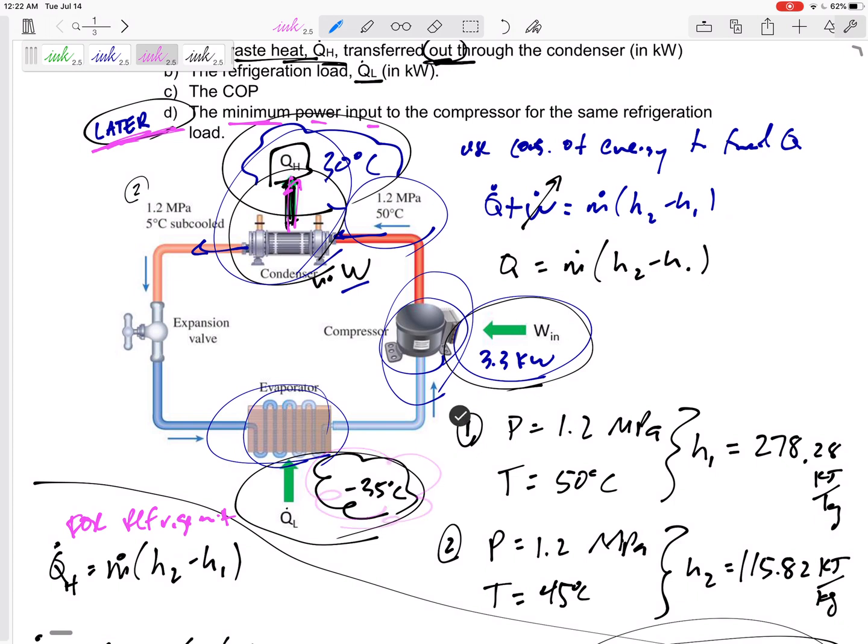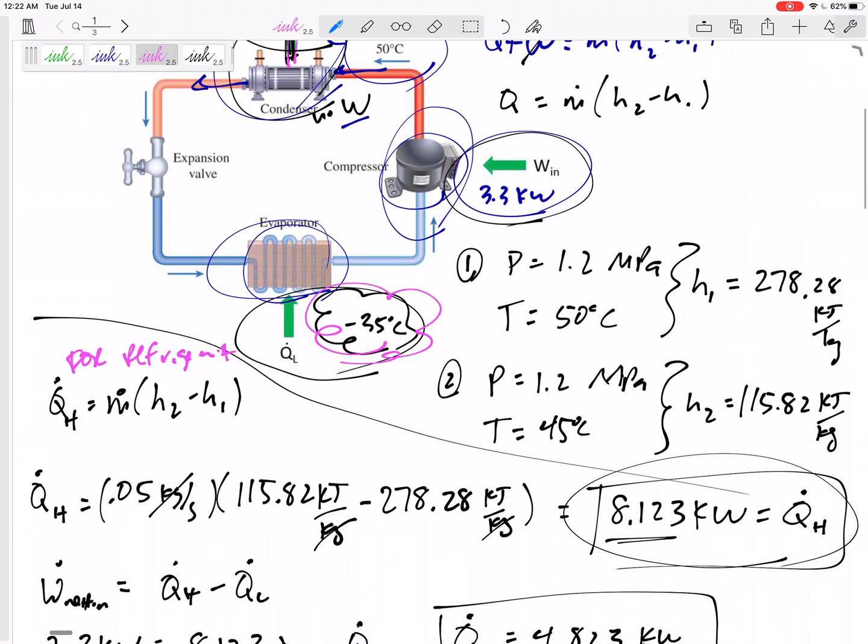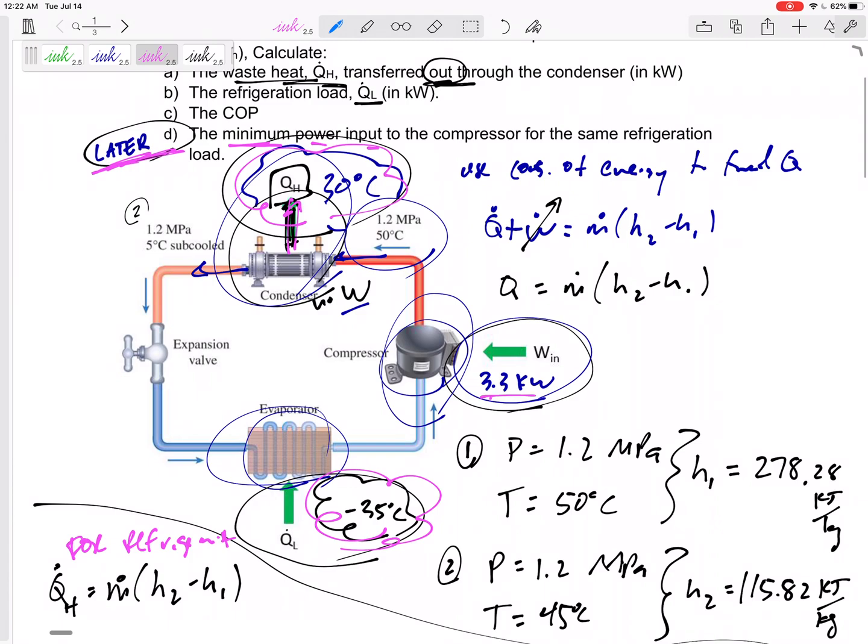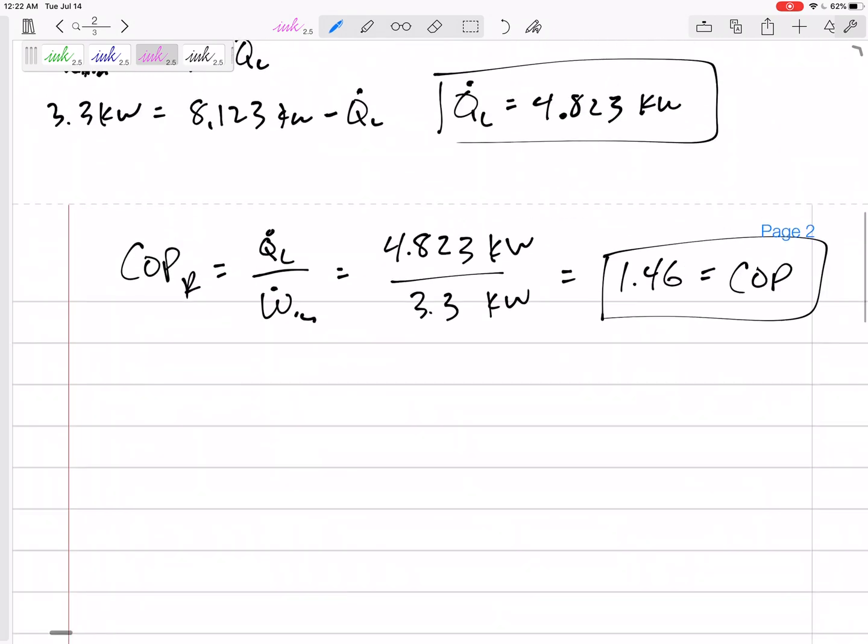TL to positive 30 TH. Can we find the new W instead of this 3.3? Well, the COP for refrigerator, for a reversible refrigerator or Carnot or the best possible, is 1 over (TH over TL minus 1).